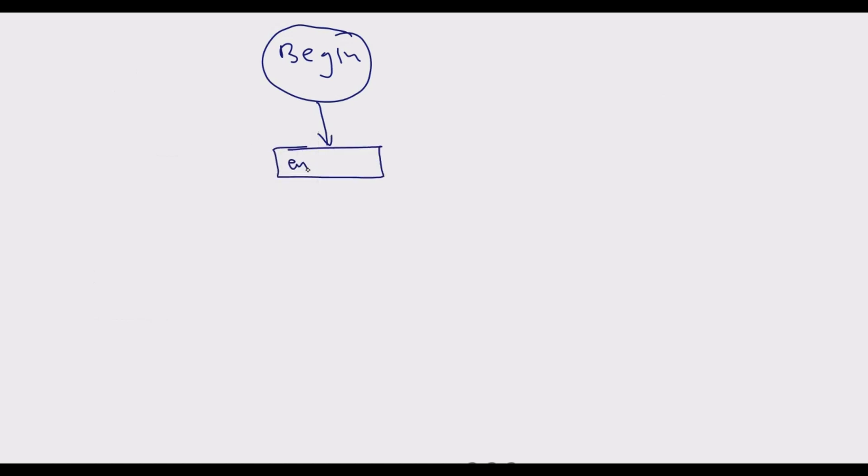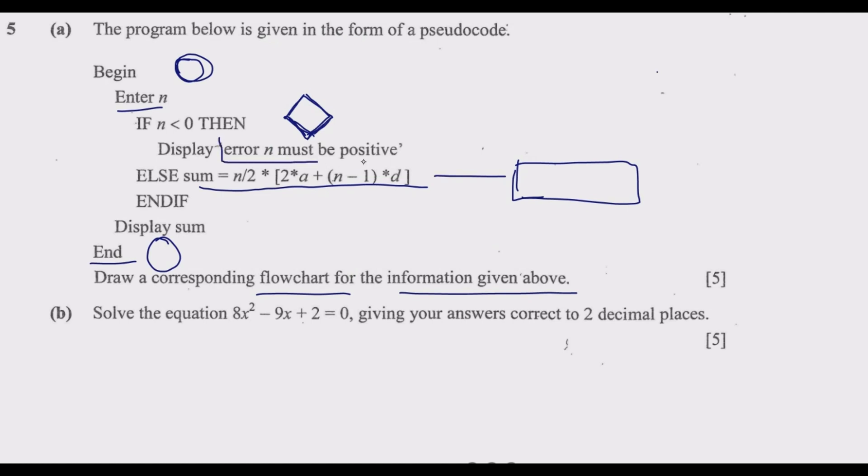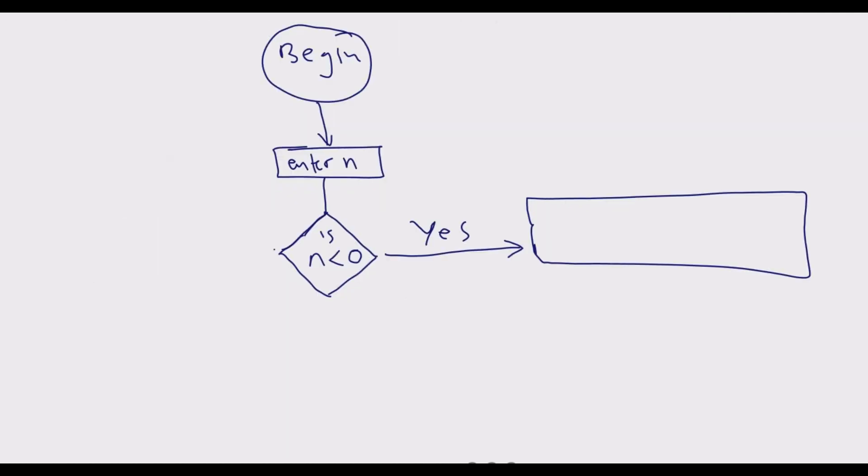We need to check whether n is positive or not using the parallelogram shape. The question asks: is n less than 0? If it is less than 0, we loop out. If yes, we display a message: "Error n must be positive."